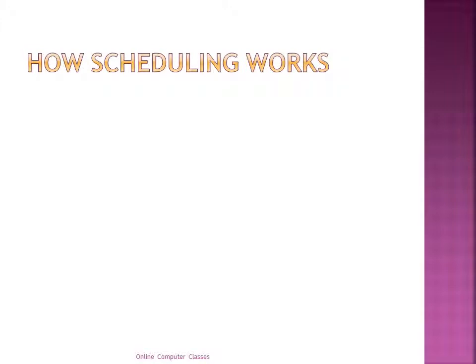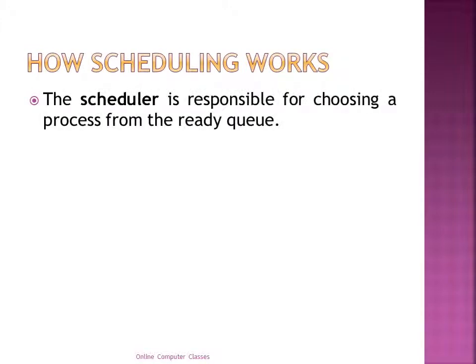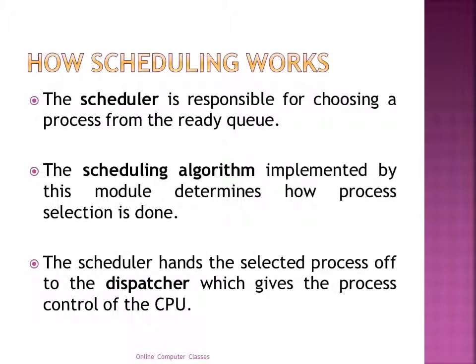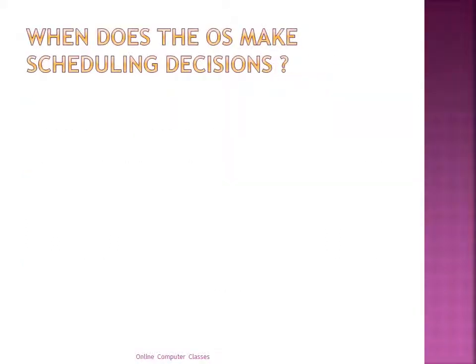The scheduler is responsible for choosing a process from the ready queue. The scheduling algorithm implemented determines how process selection is done. The scheduler hands the selected process off to the dispatcher, which gives the process control of the CPU. When does the operating system make scheduling decisions? In what conditions does it make a decision?